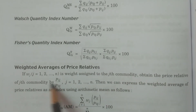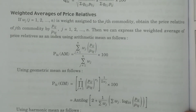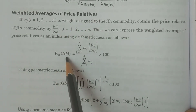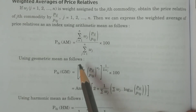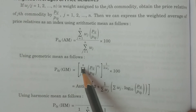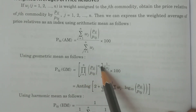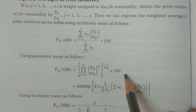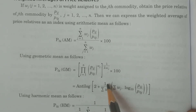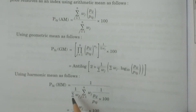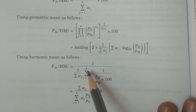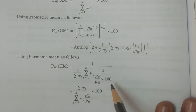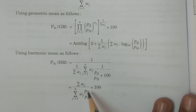We also have weighted average price relatives. P0I(AM) = summation WJ·(PIJ/P0J) divided by summation WJ, into 100. P0I(GM) = antilog of [(1/summation WJ) × summation WJ·log(PIJ/P0J)] into 100. P0I(HM) = summation WJ divided by summation WJ·(P0J/PIJ) into 100.